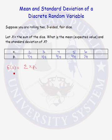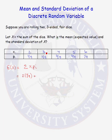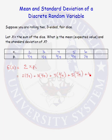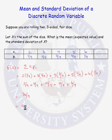Now that we have our probability distribution table for our random variable x, we can calculate the expected value or the mean. We add up over all possible values: multiply each value of the random variable by the probability that it occurs. So we take 2 times 1/9, plus 3 times 2/9, plus 4 times 3/9, plus 5 times 2/9, plus 6 times 1/9. Multiplying and adding, we find that the expected value of our random variable x is equal to 4.